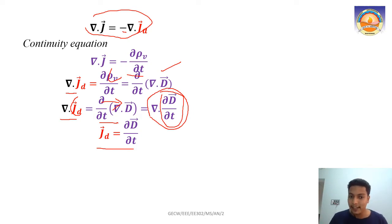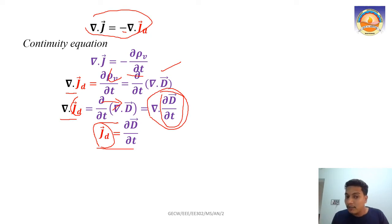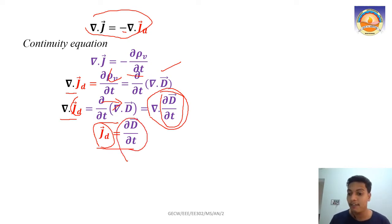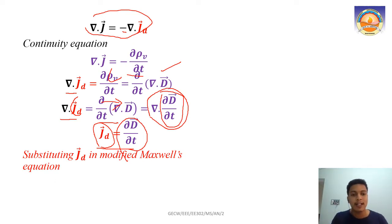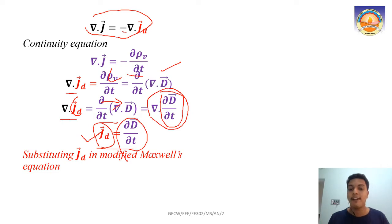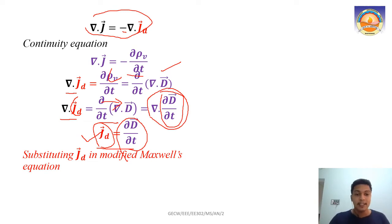So Jd equals ∂D/∂t, where D is the electric flux density. This means the Jd component of current density — which is still a current density — arises due to the time rate of change of the electric field. Because of changes in the electric field, we have this particular current component, and this component we call the displacement current density.